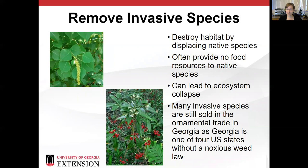Removing invasive species is an important one. Invasive species destroy habitat by displacing native species. They usually provide little to no food resources, or food resources that are not as nutritionally diverse to native wildlife. They can lead to ecosystem collapse and lead to monocultures with no predator pressure. Things like Chinese tallow, sometimes known as popcorn tree, will take over an area and spread along waterways. Its seeds are very viable, it's spread by animals, and it pushes everything else out and takes over the ecosystem.